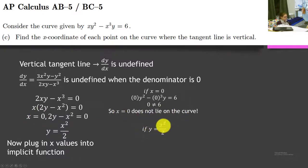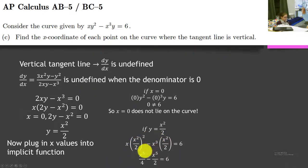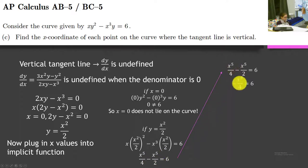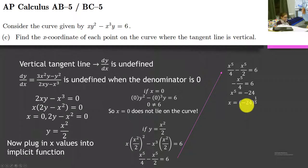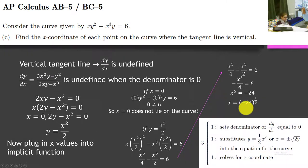Now we substitute y equals x²/2 into our implicit function. Using our exponential rules, x²/2 squared is x⁴/4. So we'll get x⁵/4 minus x⁵/2. Adding those fractions gives negative x⁵/4. We multiply by 4, take the fifth root on both sides, and we get the answer negative 24 to the 1/5, which is correct. We get 1 point for setting the denominator of dy/dx equal to 0, 1 point for substituting y equals x²/2, and 1 point for the final x-coordinate.